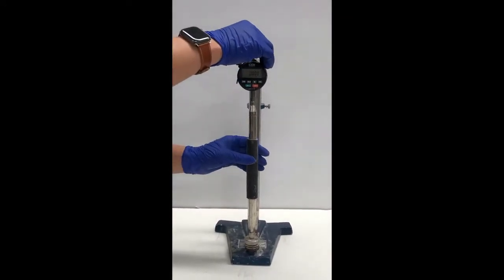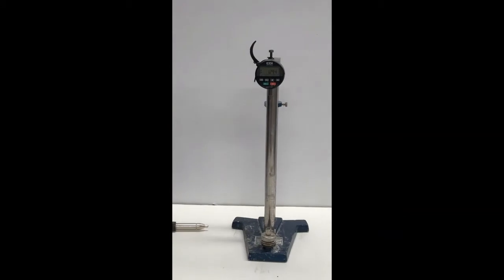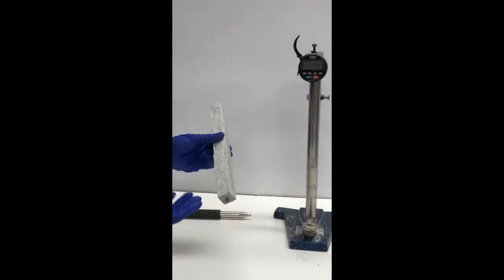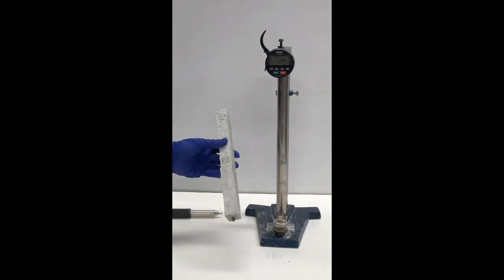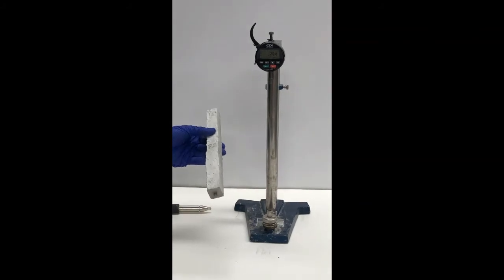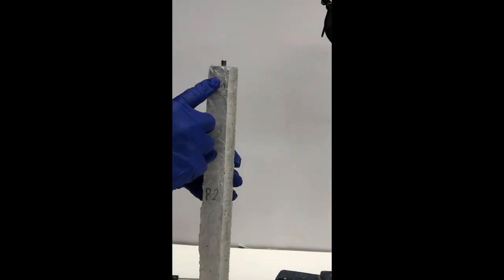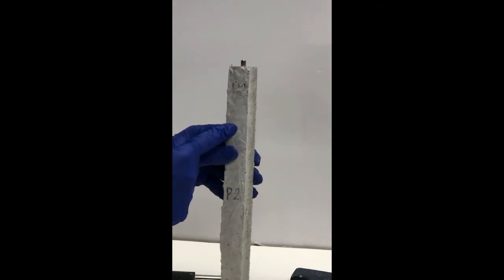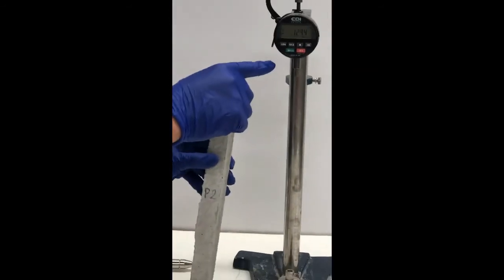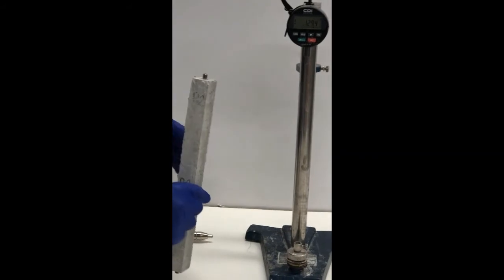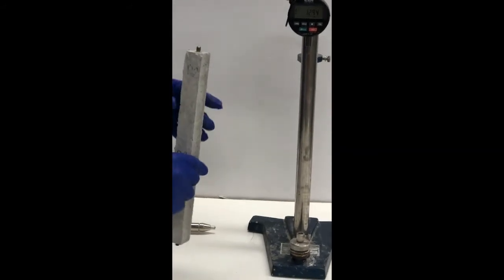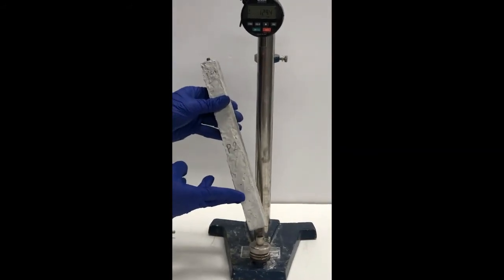After that, we remove this one and put our specimen in this device. One trick I always do is mark a point so that every time I measure this bar, I put that point on the top. This ensures no other variables influence our result. Then, similar to the steel rebar, we place it in the device.